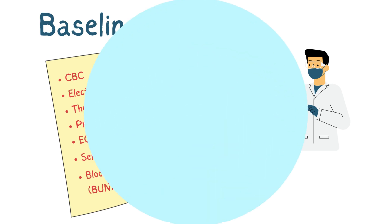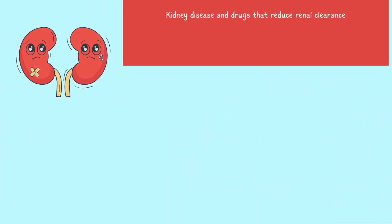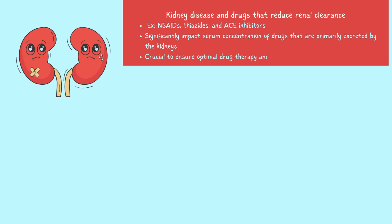It is important that you understand that kidney disease and drugs that reduce renal clearance can significantly impact the serum concentration of drugs that are primarily excreted by the kidneys. Understanding these interactions is crucial for healthcare professionals to ensure optimal drug therapy and minimize the risk for adverse effects.